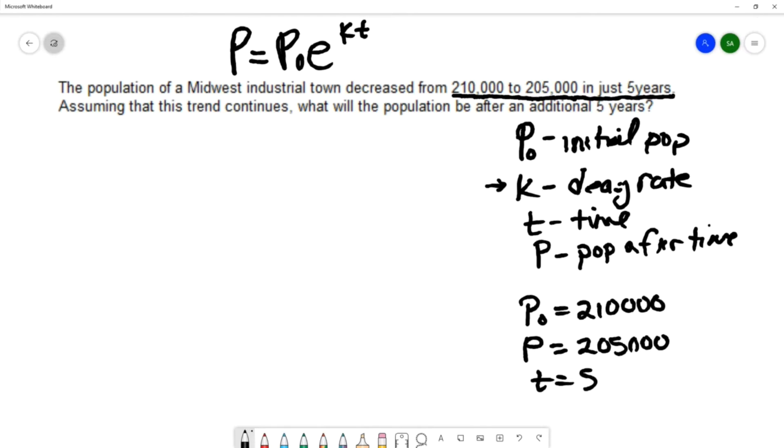We're going to substitute those values into our exponential decay model. That will give us 210,000 equals 205,000 e^(5k). This will allow us to solve for the value of K.